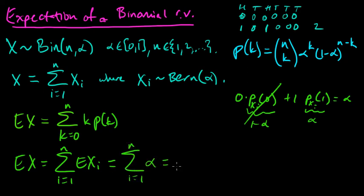So we just get N times alpha. And that is the expected value of a binomial random variable.